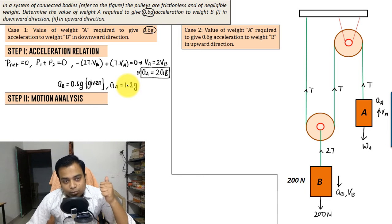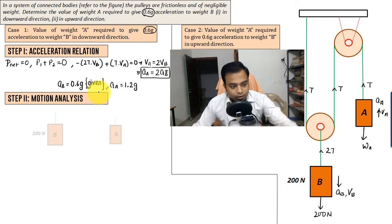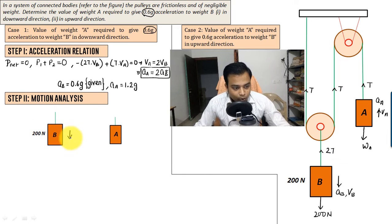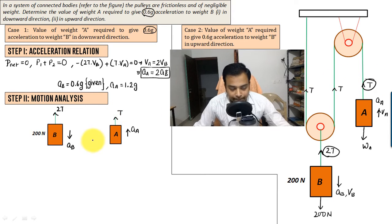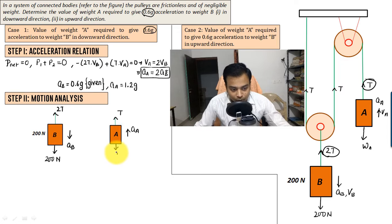Let me create a free body diagram for both blocks. Block B goes downward with acceleration A_B; block A goes upward with acceleration A_A. The tension for block B in the upward direction is 2T, and for block A it's T. Weight acts downward — 200 N for block B, and let's assume the weight of A is W_A.